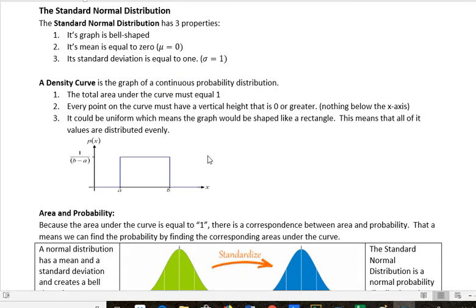A density curve is the graph of a continuous probability distribution, and the total area under the curve has to equal one. Every point on the curve must have a vertical height that is zero or greater. That is, there's no negative values. It could be uniform, which means the graph would be shaped like a rectangle, and that means all the values are distributed evenly, and this is a uniform distribution.